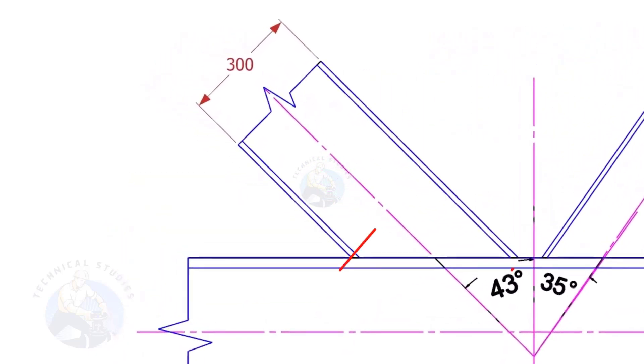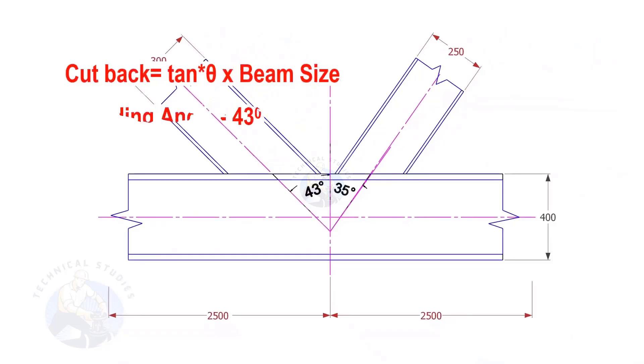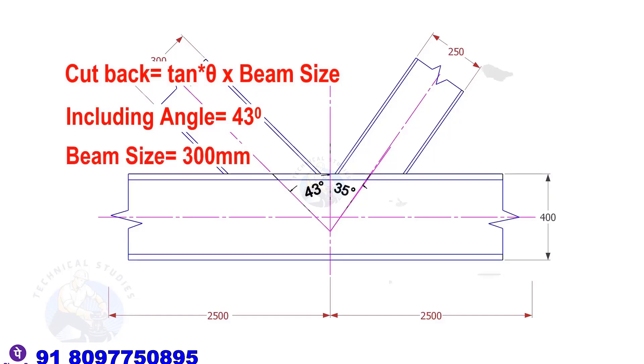Let us calculate the cutback of this beam. The formula to calculate the cutback is tan degree multiplied by the size of the beam. If the including angle is 43 degree and the size of the beam is 300, the cutback is tan 43 into 300.